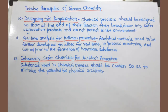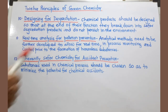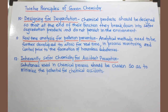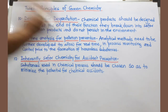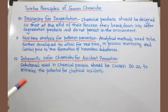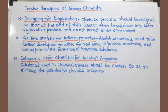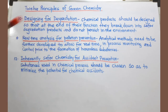The tenth principle is designing for degradation. Whatever chemical you produce should be degradable — it should not remain in the environment for a long time. Once its function is complete, it should be capable of degradation. We must design chemicals that can be degraded after their work is done.